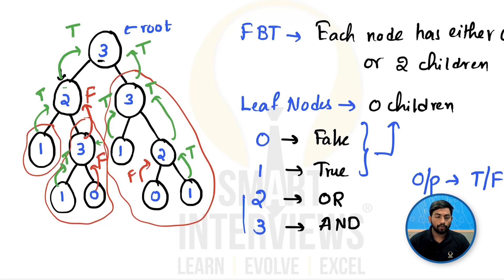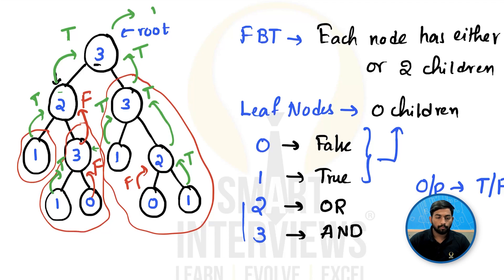True AND true is going to be true again. So at the root, true AND true is going to be true. So the output is true for this binary tree. So this is how we evaluate.